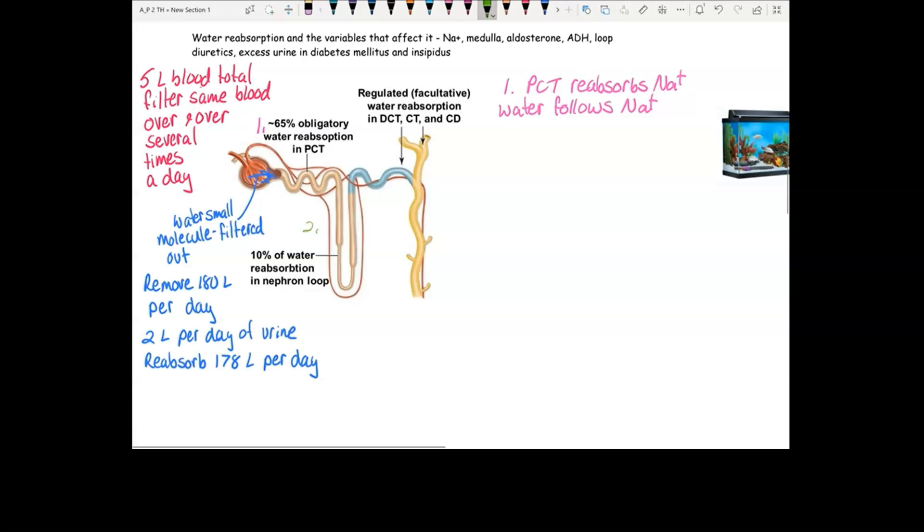Number two occurs down here at your loop. This is 10% of your reabsorption in the loop. The loop has two parts. If we think about the flow of tubular fluid, remember tubular fluid is coming from the proximal convoluted tubule. And it's going down and then it curves and it goes back up. This side is the descending limb. This side is the ascending limb.